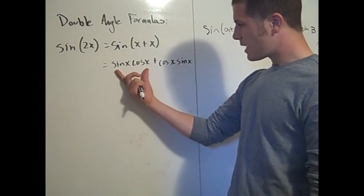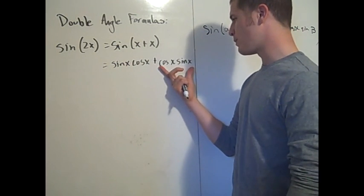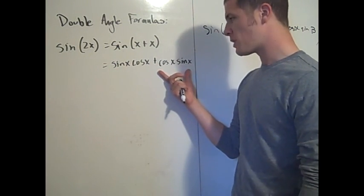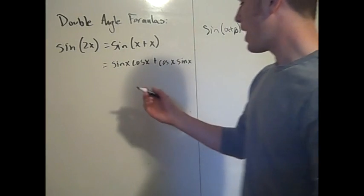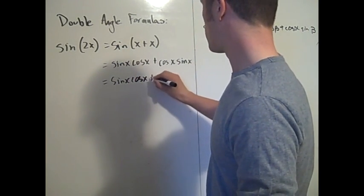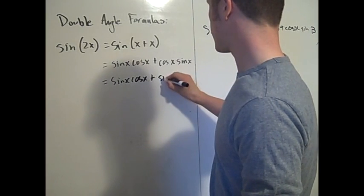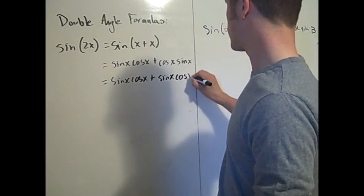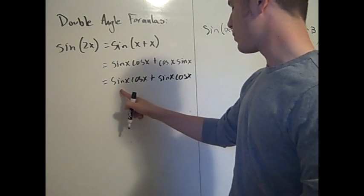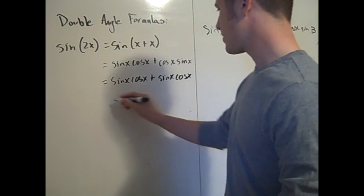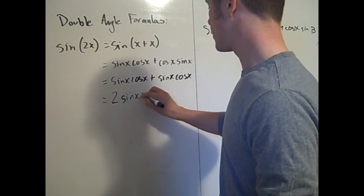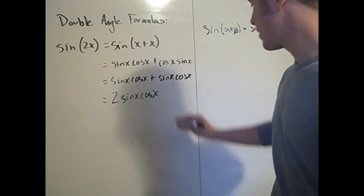Sine x times cosine x and cosine x times sine x are the exact same thing because multiplication is commutative. So we can write this as sine x cosine x plus sine x cosine x, and adding them up gives exactly 2 sine x cosine x. That's the proof for the double angle formula for sine.